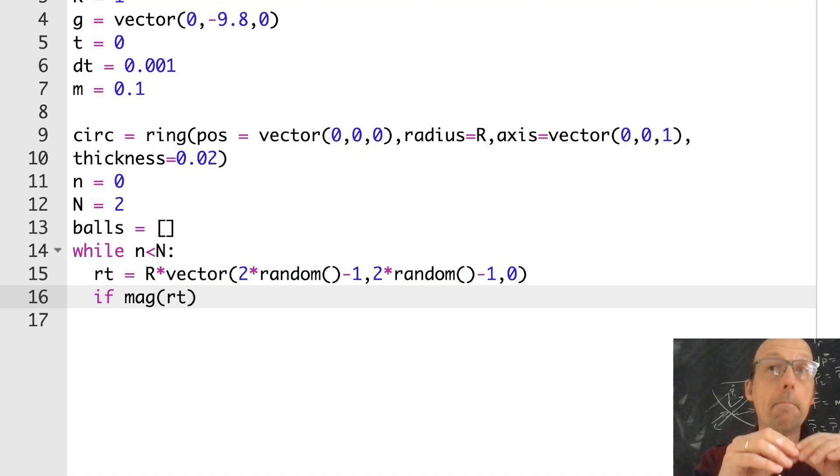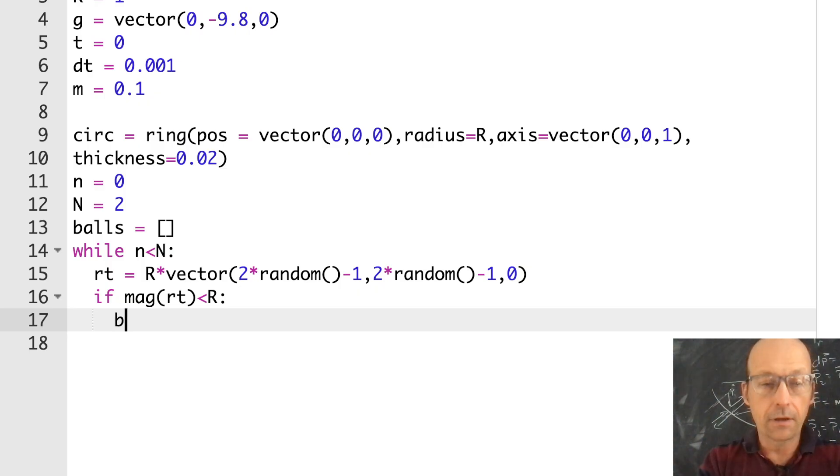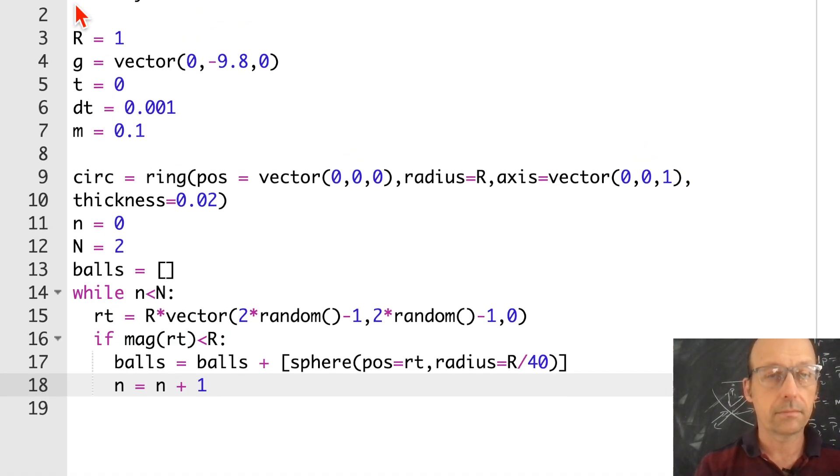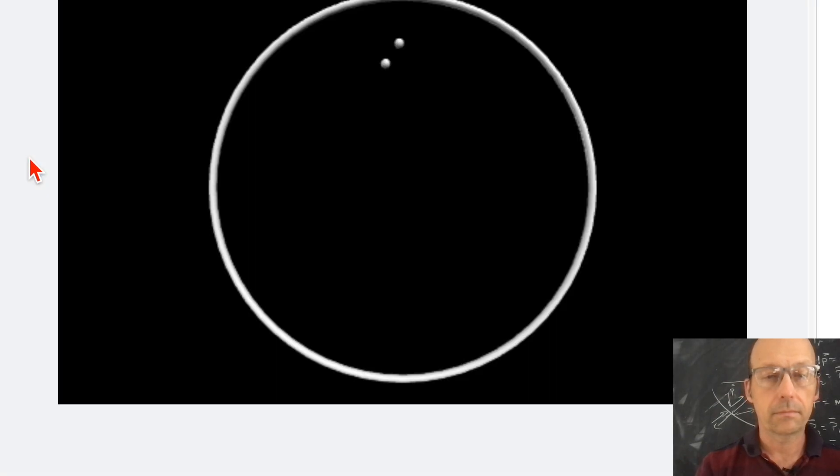So now this will give me a vector in the square, negative r to r. But I want it to be in a circle. So I'm going to throw it away if it's outside of that. So let's do this. If rt, mag, mag gives you the magnitude of a vector, is less than r, then I'm going to add a ball to the sphere, a sphere to the balls. So balls equals balls plus sphere, pos equals rt, radius is, let's say, r over 40. Let's just try that. And then I'll count it. n is n plus 1. So if I make a vector that's outside of the circle, I just don't even count it. So I should only get two balls. Let's just see if this works.